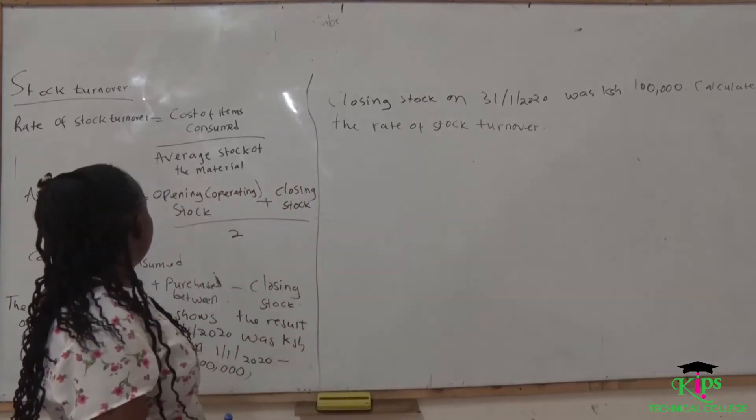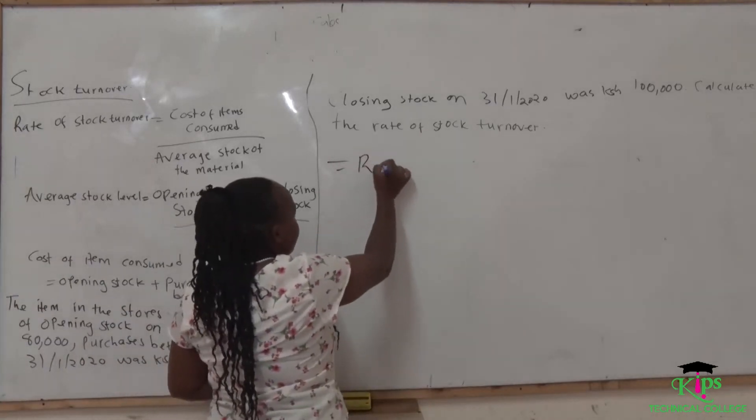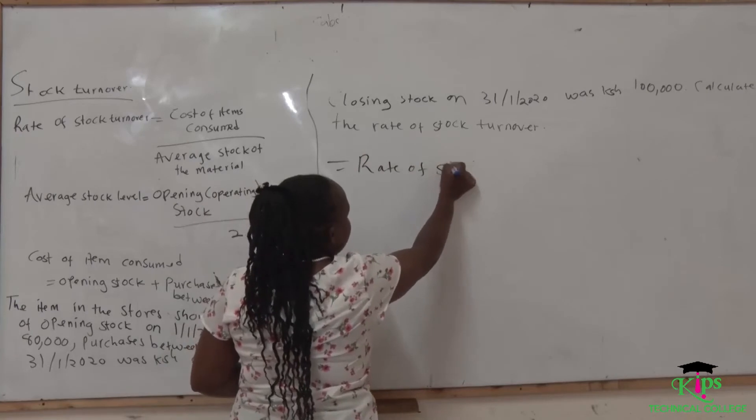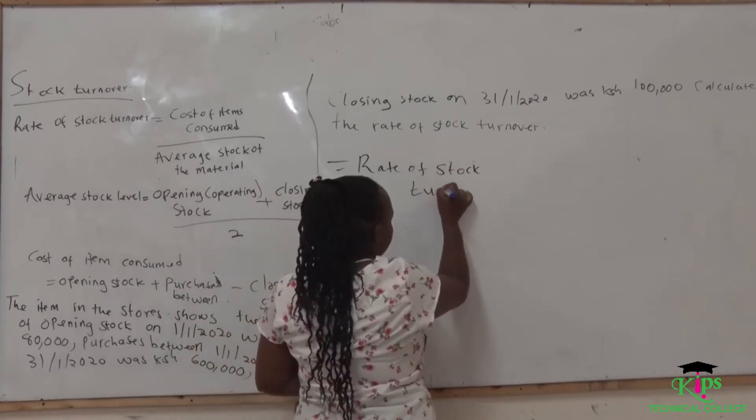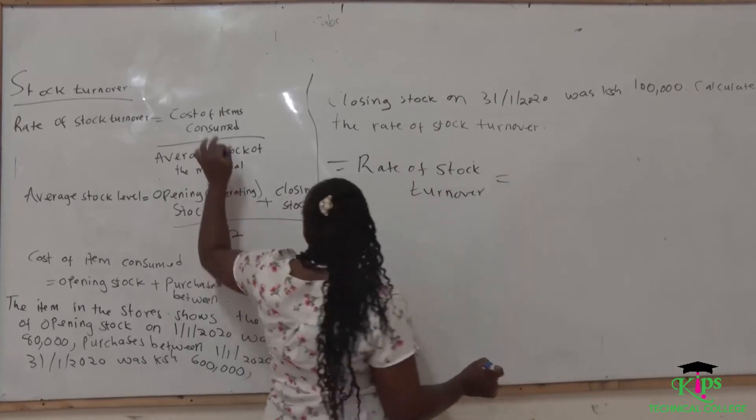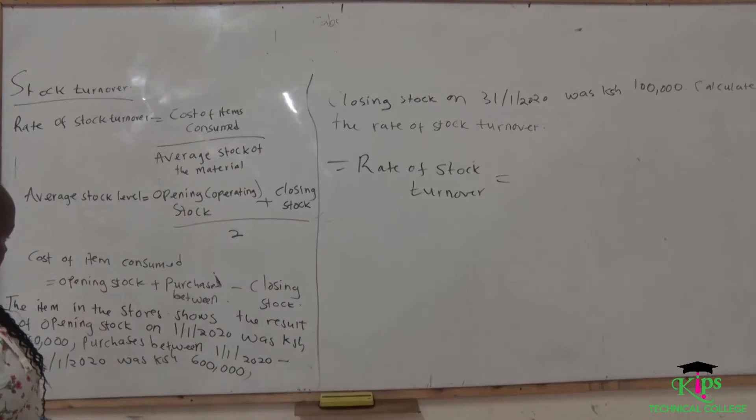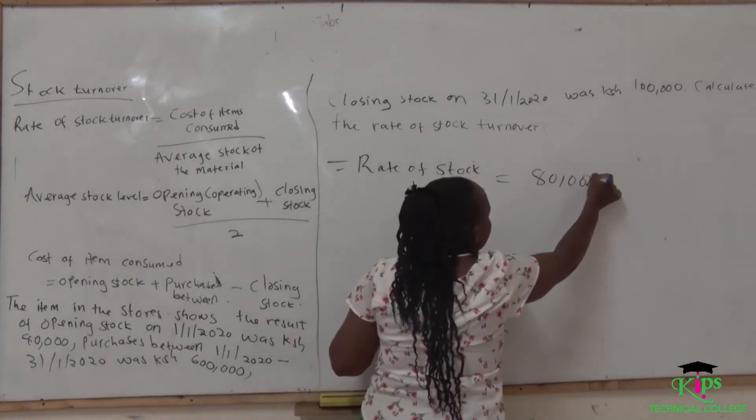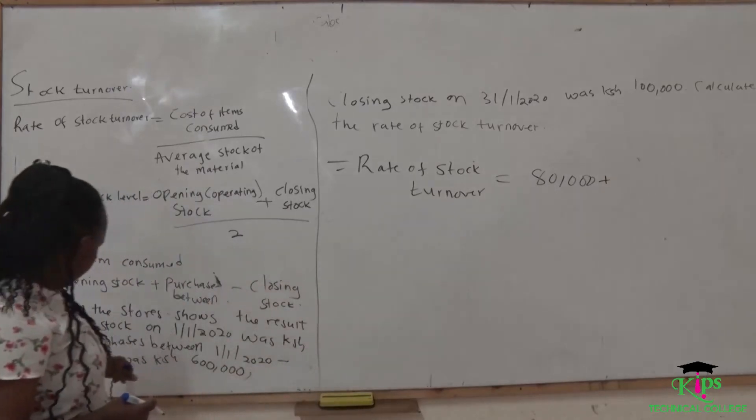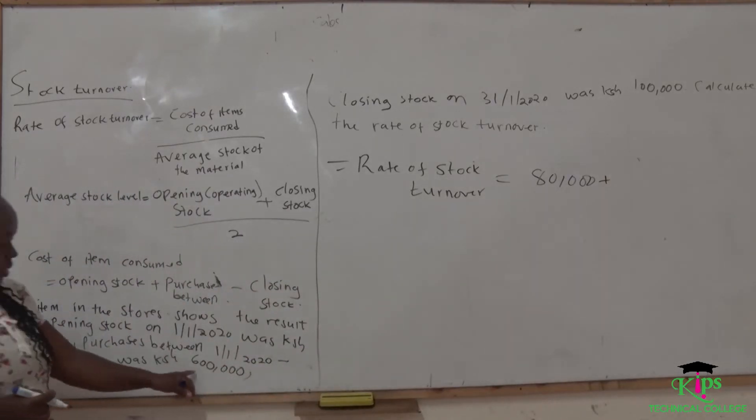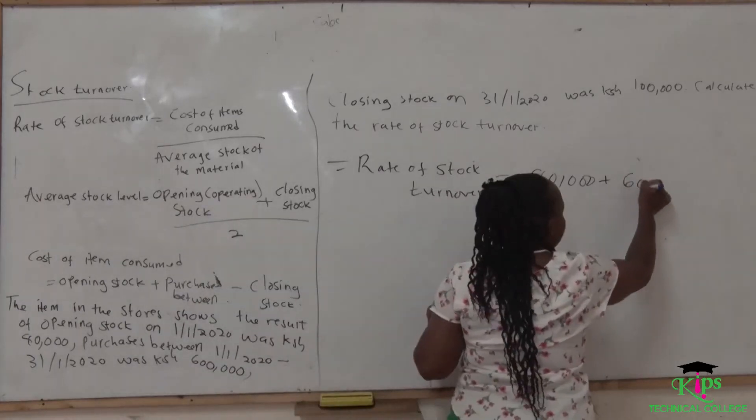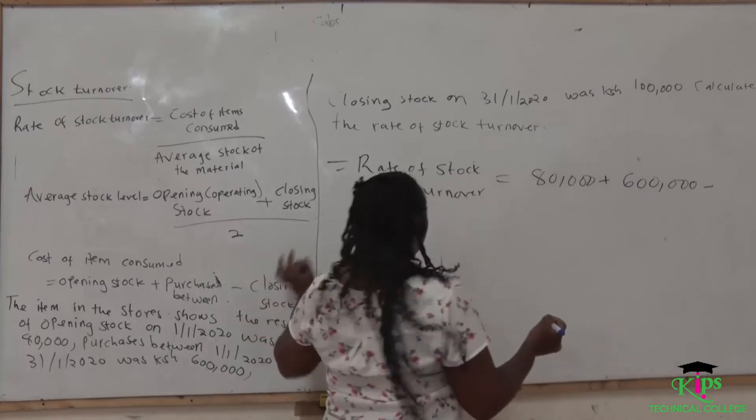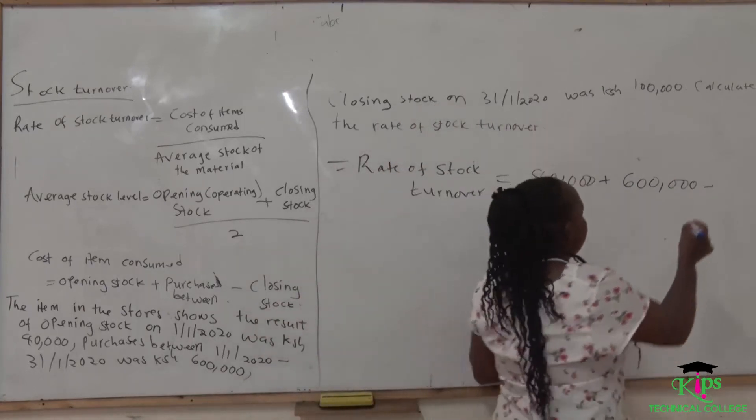We are told to calculate the rate of stock turnover. Having this formula which is the rate of stock turnover, we write rate of stock turnover. We have said it equals cost of item consumed. And in this case, we are not given the cost of item consumed. We have known the formula of calculating the cost of item consumed, which is the opening stock. Our opening stock was $80,000, so we write here $80,000 plus purchases between, and we have the purchases between was $600,000. So we write here $600,000 minus closing stock. And we are given what is a closing stock, which was $100,000.